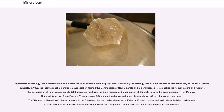Systematic mineralogy is the identification and classification of minerals by their properties. Historically, mineralogy was heavily concerned with taxonomy of the rock-forming minerals. In 1959, the International Mineralogical Association formed the Commission on New Minerals and Mineral Names to rationalize the nomenclature and regulate the introduction of new names. In July 2006, it was merged with the Commission on Classification of Minerals to form the Commission on New Minerals, Nomenclature, and Classification.